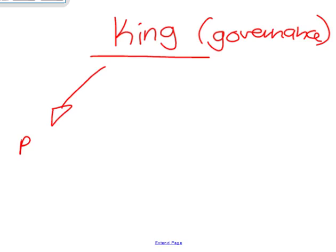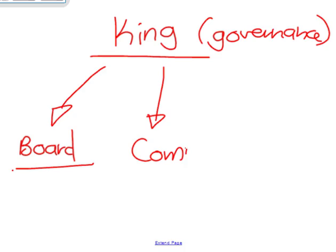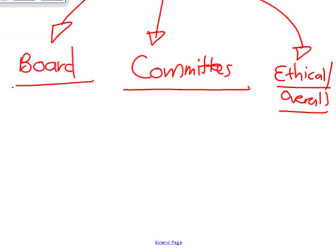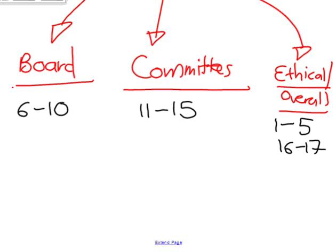From a reference point of view: for the ethical/overall section, I'm talking about principles 1 to 5 and 16 and 17; for the committees it's pretty much 11 to 15; and for the board it's 6 to 10. That's how I group the discussion, and that's the way it was done — that's how you'll get the most marks.